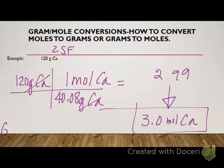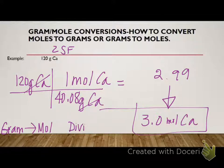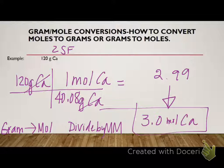So that's how you do a gram to mole conversion. So if I'm going grams to moles, I'm going to divide by the molar mass. So if I have to go grams to moles and I divide by the molar mass, what do you think I'm going to do if I'm going to go moles to grams?